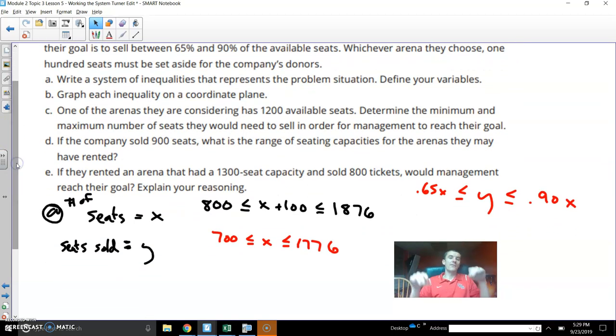So the first thing I did was define my variables. X represents the number of seats, like the capacity of the arena, but Y represents how many you are selling. So the idea here is that you want between 800 and 1876, but that includes a hundred for the donor. So if we were to subtract a hundred out of the middle, that brings us down to 700 and 1776. So this is the range of possible seats that are needed for the arena. Now this other statement over here, this is more about the idea of the 65% to 90%. So the seats sold, that should be calculated based on 65% of X or 90% of X. X represents how many seats the arena has. So basically we want the Y value to be between 65% and 90% of the total capacity.